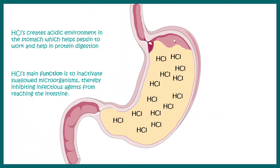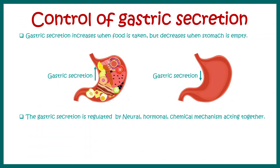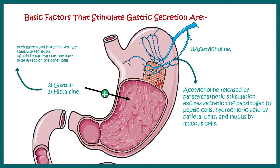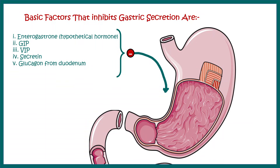The HCl in the stomach creates a highly acidic environment which aids in protein digestion. It also neutralizes microorganisms that have entered the alimentary canal through food. Gastric secretion is increased when food is taken into the stomach and decreased when the stomach is empty. It is regulated by neural, hormonal, and chemical mechanisms. The basic factors that stimulate gastric secretion are gastrin, histamine, and acetylcholine, while inhibitory factors include enterogastrone, gastric inhibitory peptide, VIP, secretin, and glucagon from the duodenum.